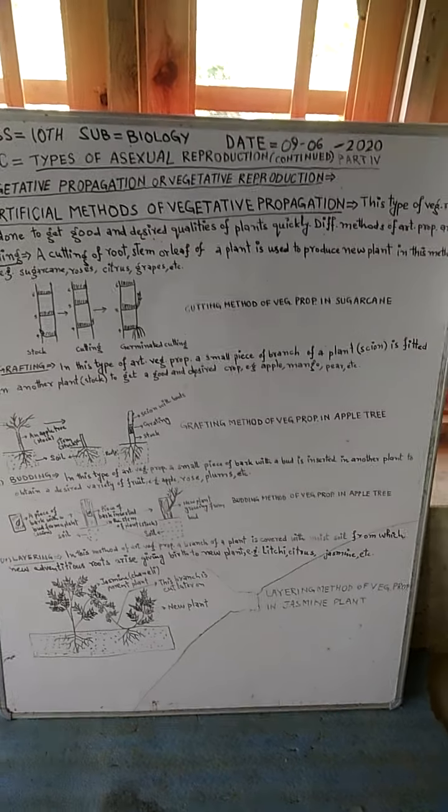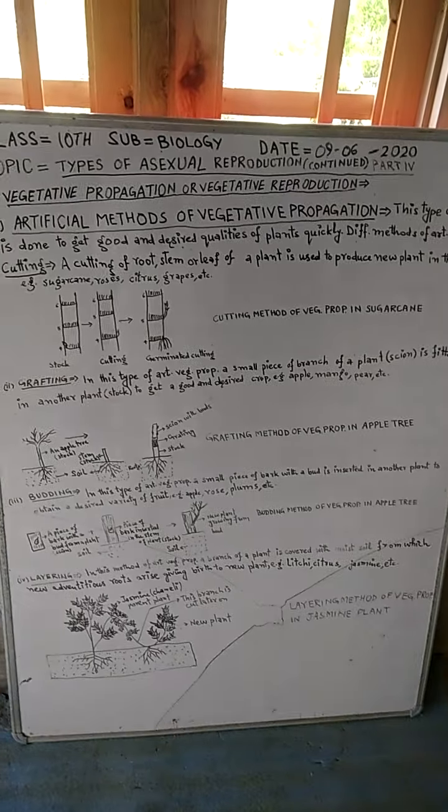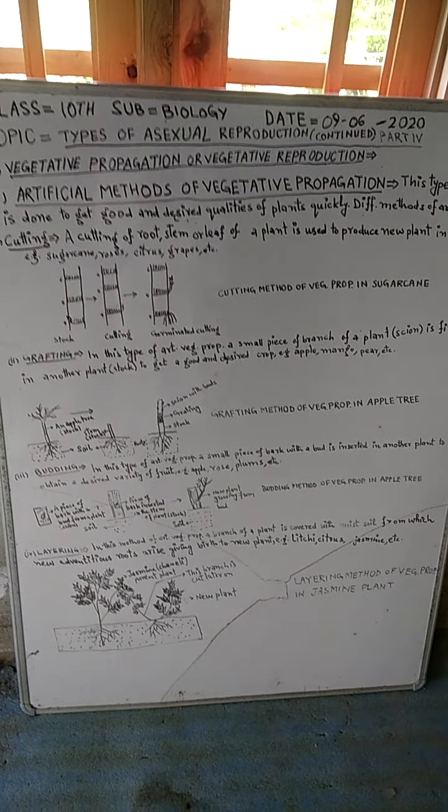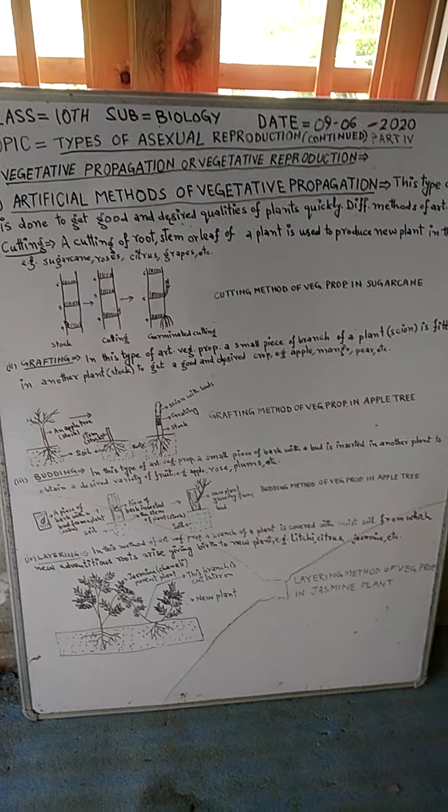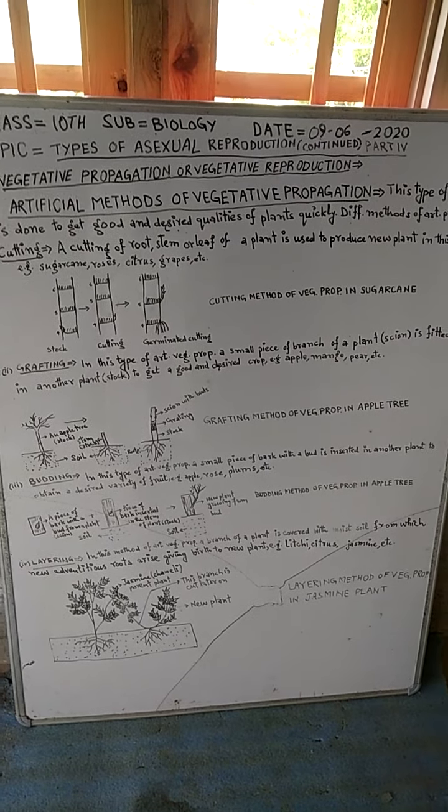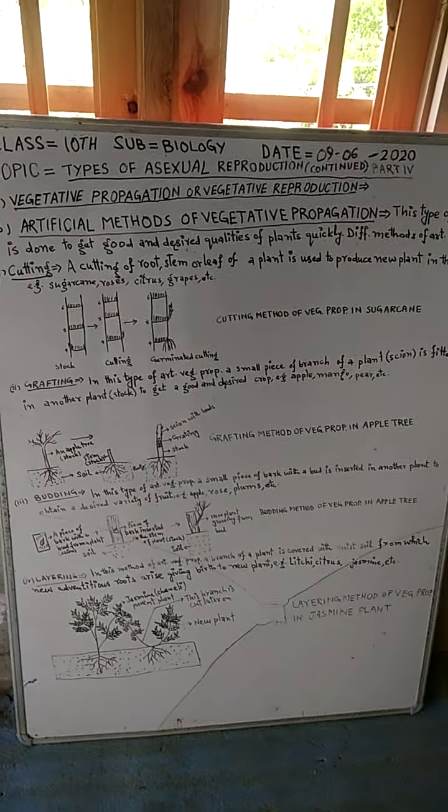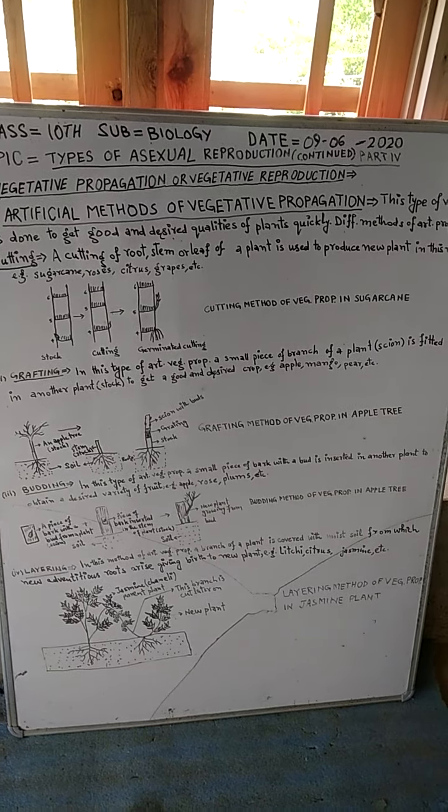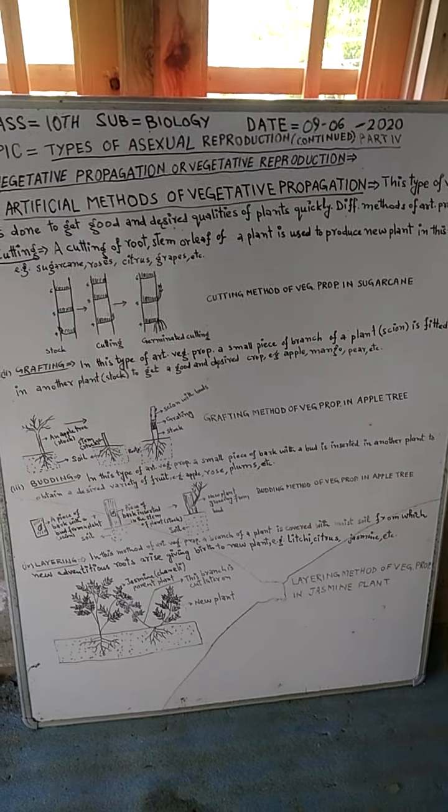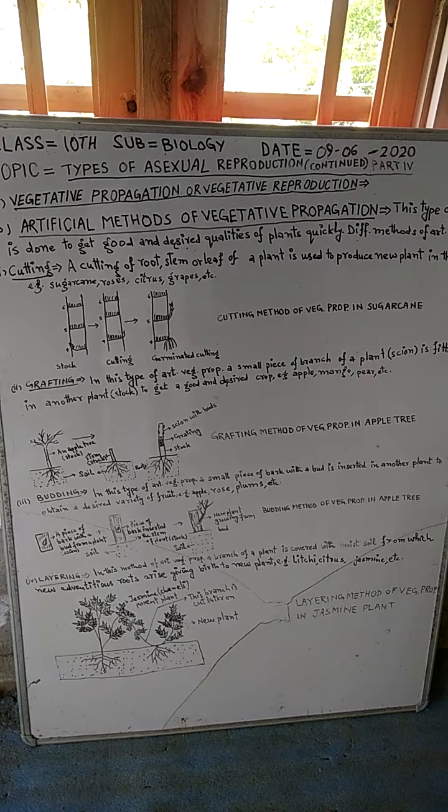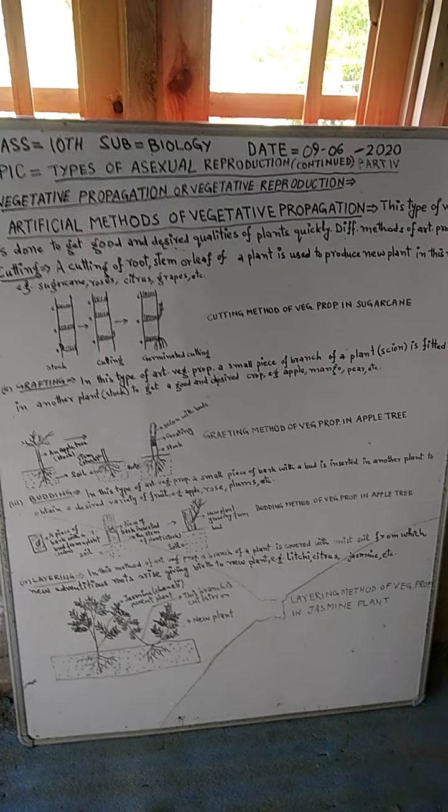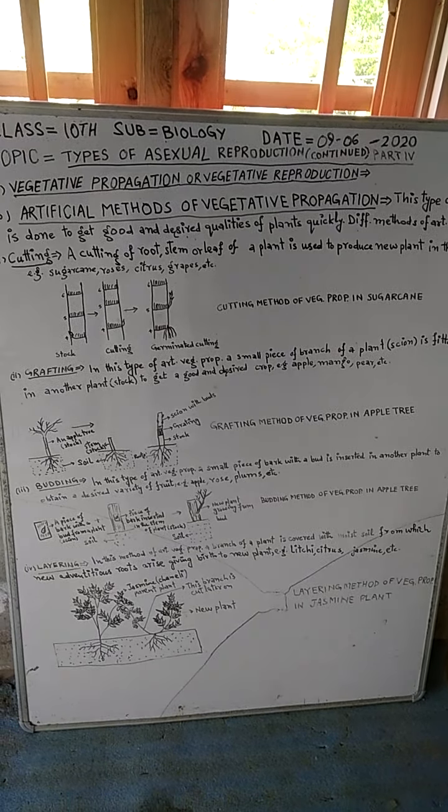It is fourth part of this topic. Sixth part of Asexual Reproduction is Vegetative Propagation or Vegetative Reproduction. It is first part that is Natural Methods of Vegetative Propagation.